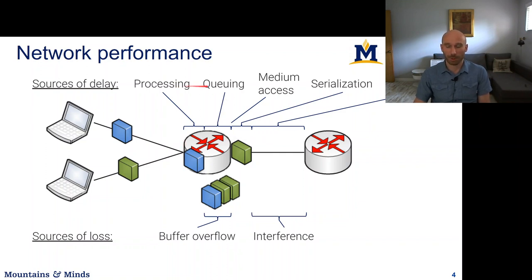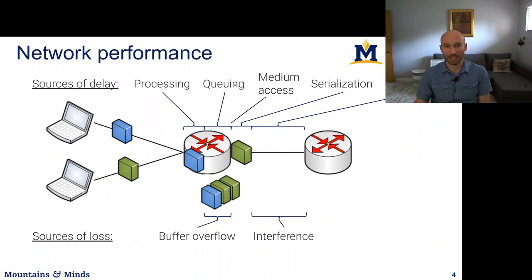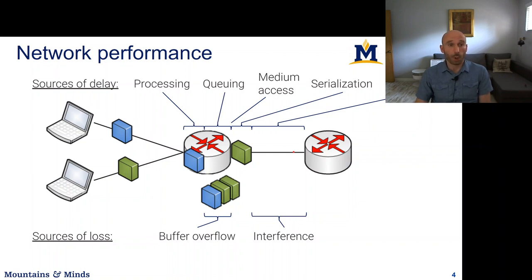To figure out delay on a hop you add up all these factors — processing, queuing, medium access, serialization, and propagation delay. Sometimes they're easy to understand, sometimes not. For end-to-end delay you sum all these factors across all links on the end-to-end path.